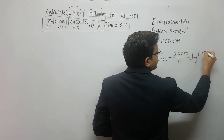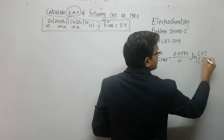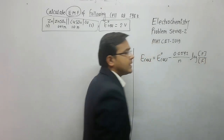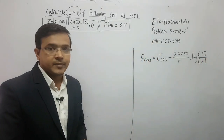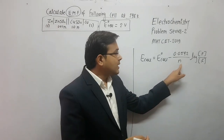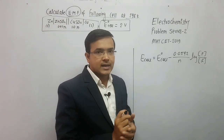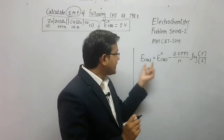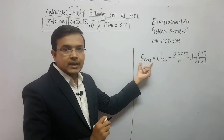The equation uses the concentration of product upon concentration of reactant. In this equation, you have to determine N, the number of electrons transferred. We need to calculate E_cell.